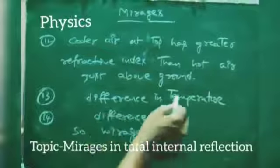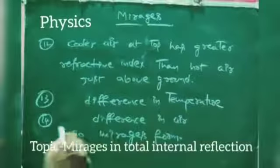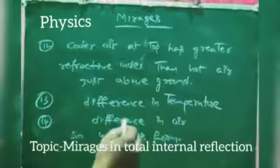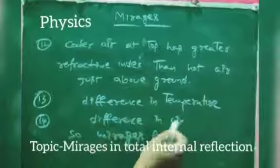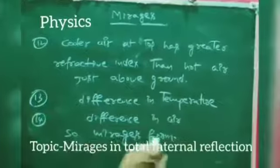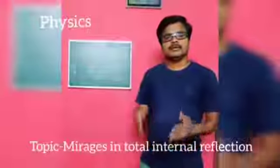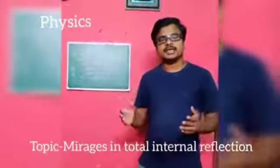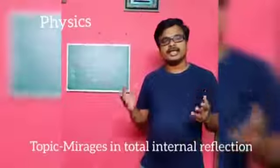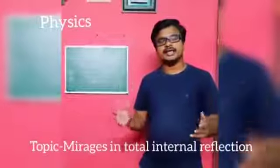Cooler air at the top has a greater refractive index than hot air just above the ground. Thirteenth point: difference in temperature. Fourteenth point: difference in density. So mirages form. Let us recall how mirages are created.